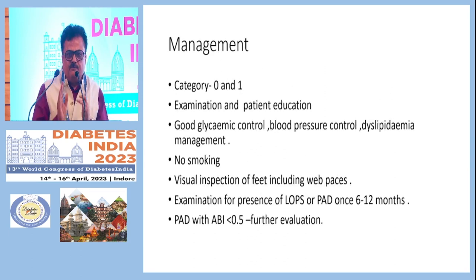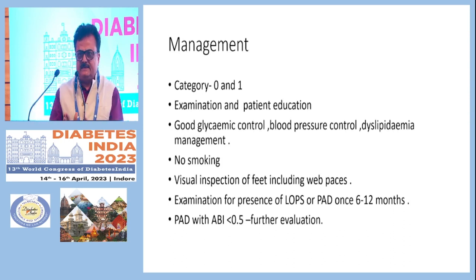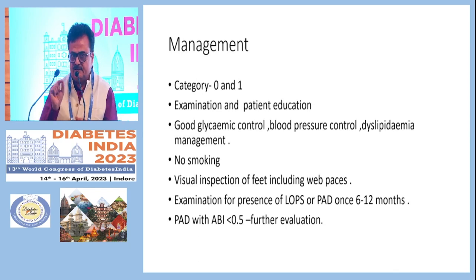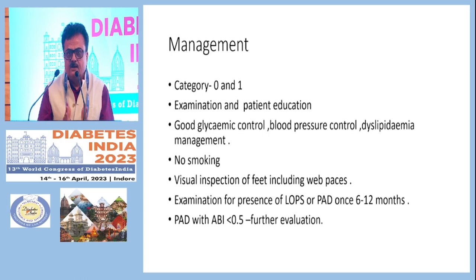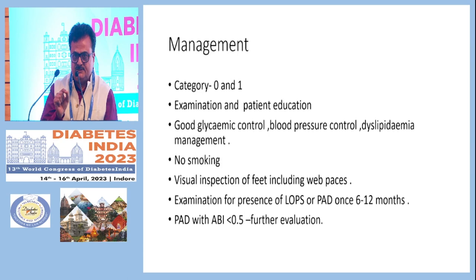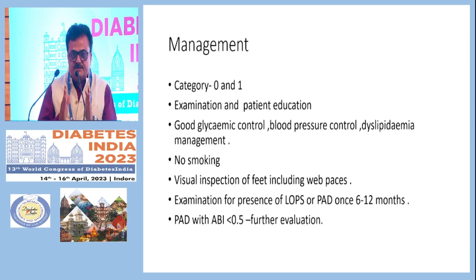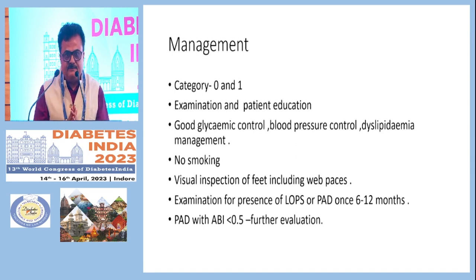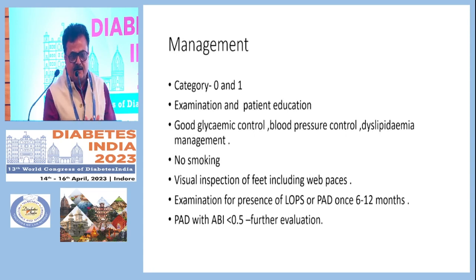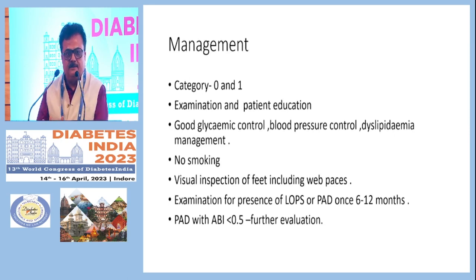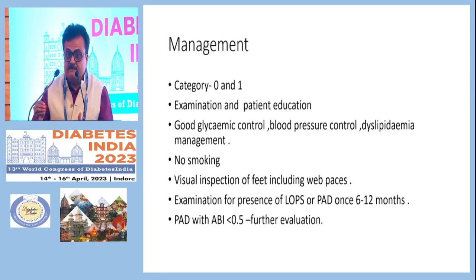Patients with ABI below 0.5 may require direct referral to a vascular surgeon before ulceration or gangrene occurs. For risk category 0 and 1 — normal feet or only loss of protective sensation or peripheral arterial disease — regular clinical examination and patient education are most important. Good glycemic control, blood pressure control, dyslipidemia management, no smoking or tobacco chewing, and visual inspection of feet daily by the patient are essential. Any cuts, ulcerations, or red marks should be reported to a clinician as early as possible.